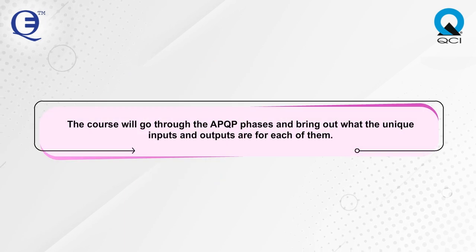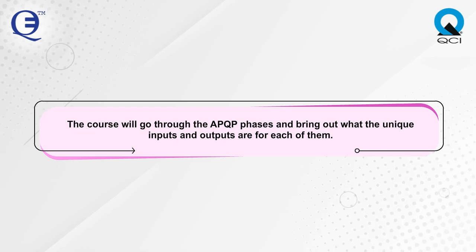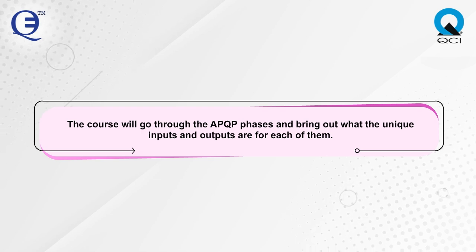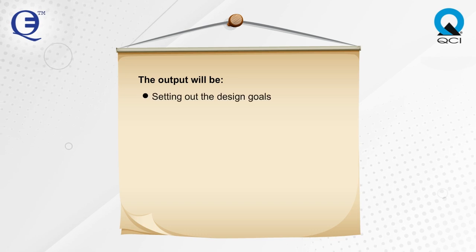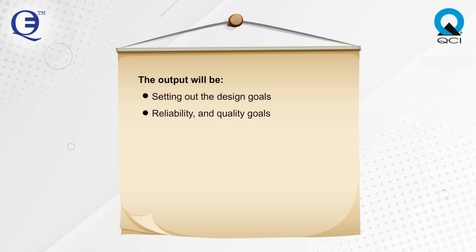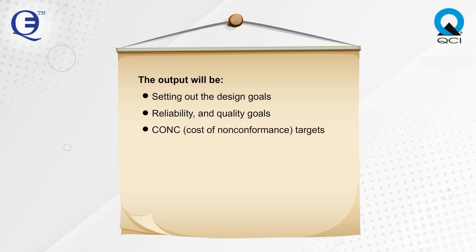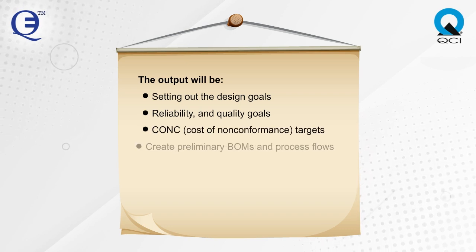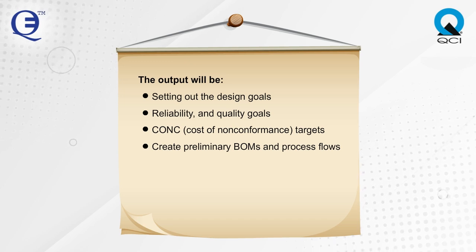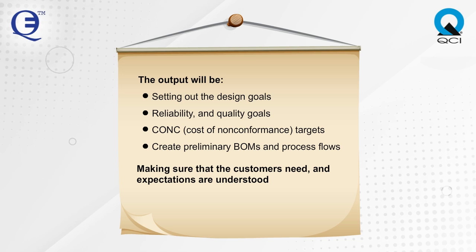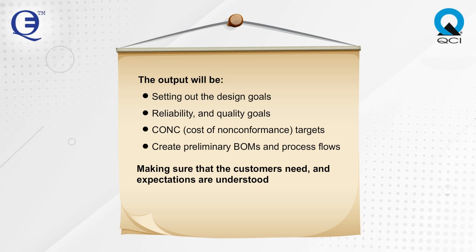The course will go through the APQP phases and bring out what the unique inputs and outputs are for each of them. The output will be setting out the design goals, reliability and quality goals, CONC (cost of non-conformance) targets, create preliminary BOMs and process flows. But the most important thing is making sure that the customer's needs and expectations are understood.